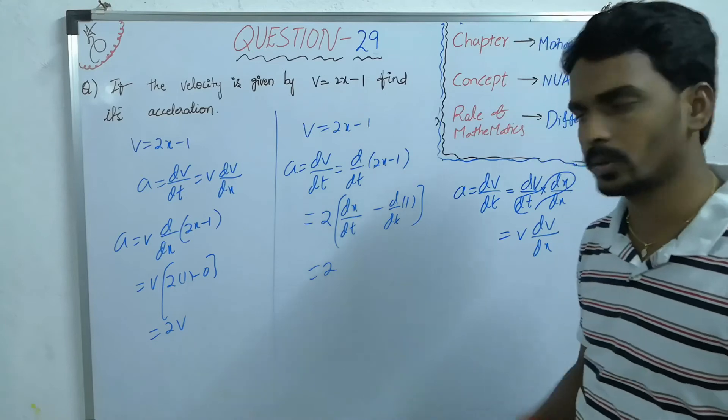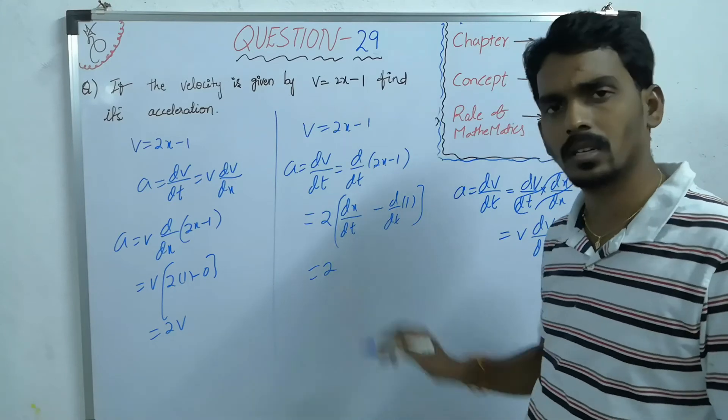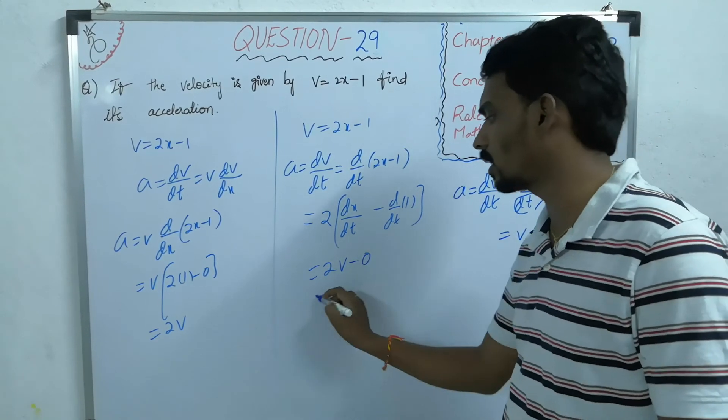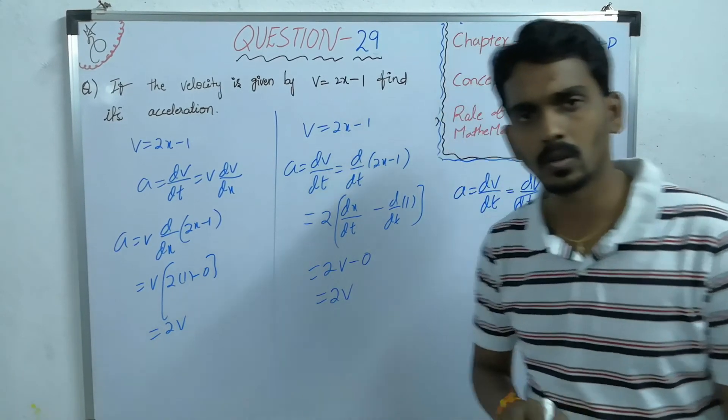So, equal to 2 into dx by dt is nothing but what? Rate of change of displacement is velocity. Differentiation of constant is 0. So, it will become 2v.